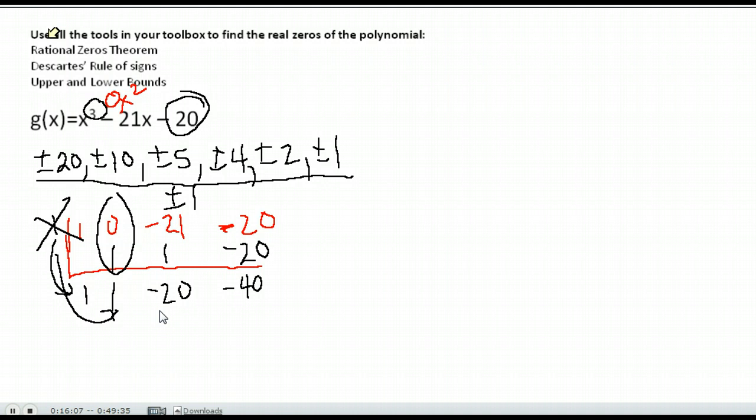So then I go and I test another one. Let's try negative 1 instead. Maybe that one will work. I should not bother with 1 again at all because I know it's not a zero. Do our synthetic division. Multiply, add, multiply, add, multiply, add.